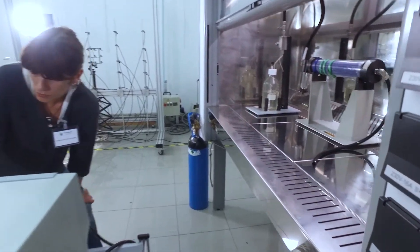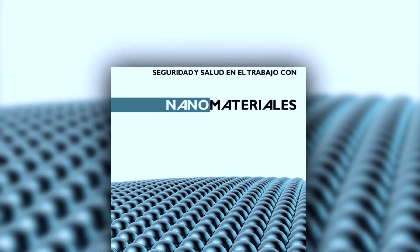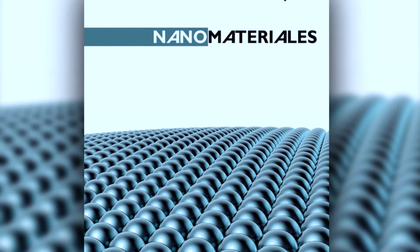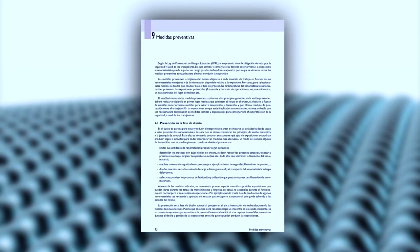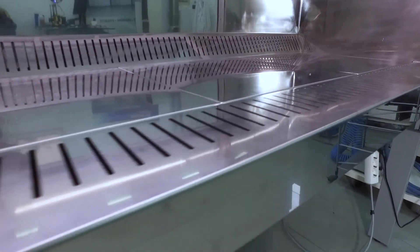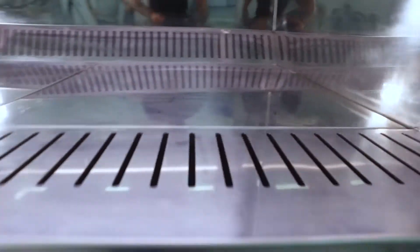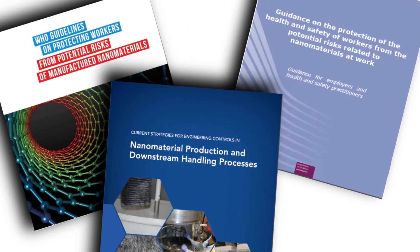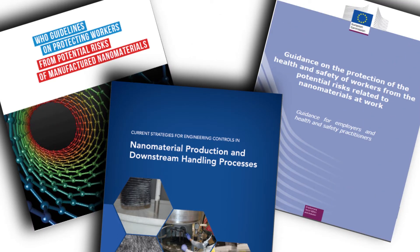The state of the art of collective protective equipment is given by the Health and Safety at Work with Nanomaterials Guide, published by the National Institute of Health and Safety at Work. Additionally, the recommended preventative measures are defined by the European Commission, NIOSH, the National Institute of Occupational Safety and Health, and the WHO, the World Health Organization.